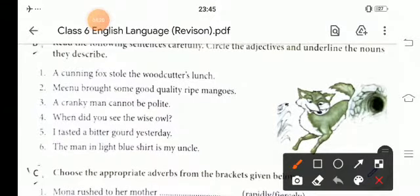Second sentence. Minu brought some good quality ripe mangoes. So, Minu is the name. So, it is a noun. We underline here. And, what she brought? She brought mangoes. So, mangoes. It is a noun. And the quality of mangoes are? It is sum. Good. Quality. Ripe.